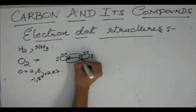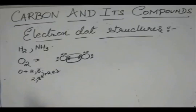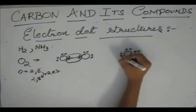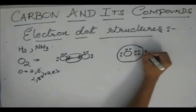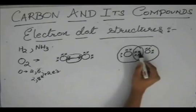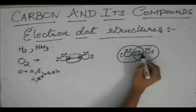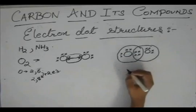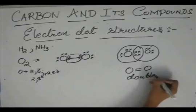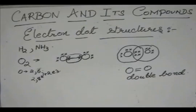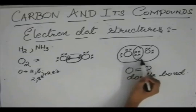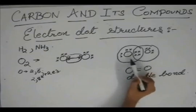So, it has to share another electron with this. And hence, when two electrons are shared by each element, that is, total sharing is of four electrons, we call it a double bond. This is the electron dot structure. So, here, this oxygen has a total of eight electrons and this oxygen also has a total of eight electrons. So, both are stable.